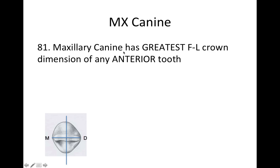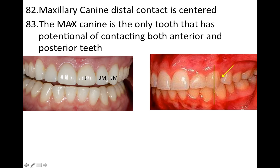The maxillary canine has the greatest facial-lingual crown dimension of any anterior tooth. Looking at it from the occlusal, I drew this line a little bit longer to represent that it has a pretty sizable facial-lingual dimension. The maxillary canine's distal contact is going to be centered, and as a quick reminder, the mnemonic 'I Just Jacked Michael Jackson's Moped' tells us where the contacts are on these anterior teeth.